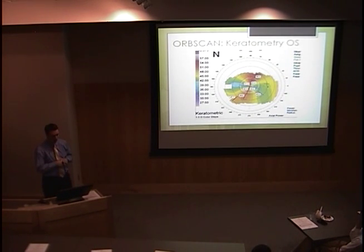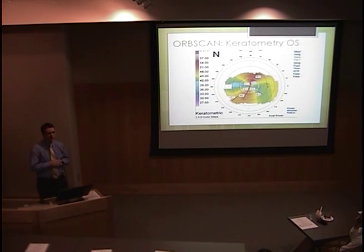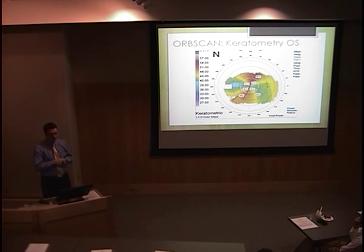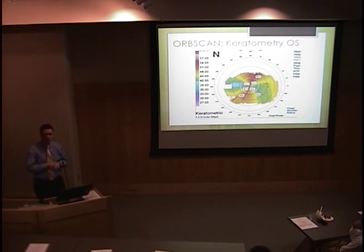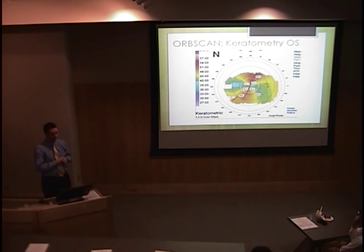On keratometry, this is actually a lot more typical for what we would expect in a Terrien's patient — increased steepness in the vertical axis causing significant amounts of astigmatism, which causes the typical change in vision for these patients.